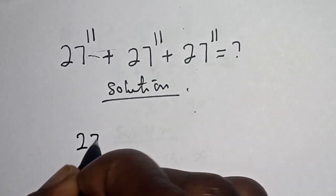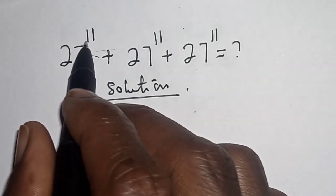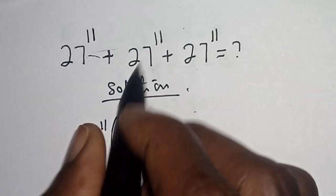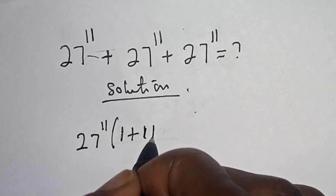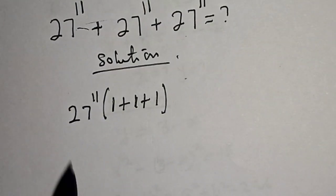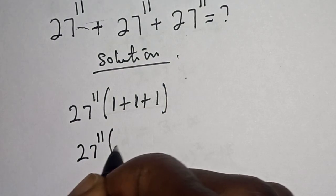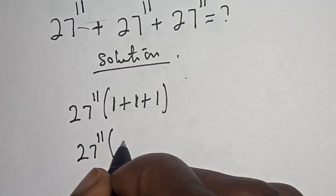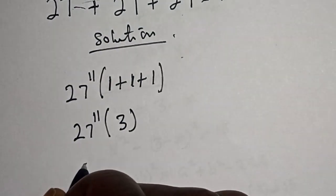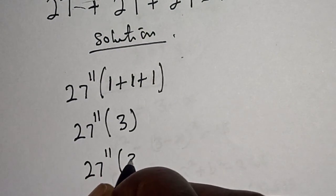Solution: 27 raised to power 11 is common, let's bring it out. 27 raised to power 11, bracket: this divided by this one, plus this divided by this one, plus this divided by this one. Then this is 27 raised to power 11, bracket 1 plus 1 plus 1. This is 3.